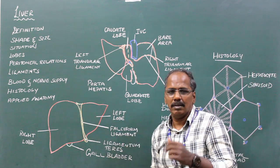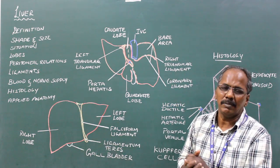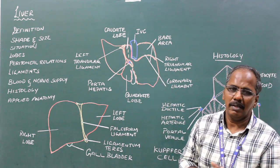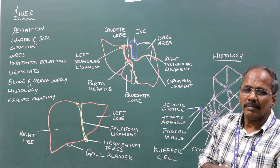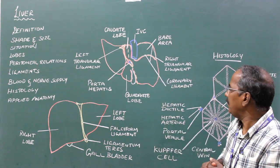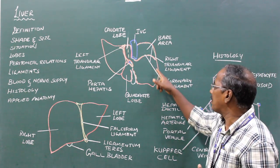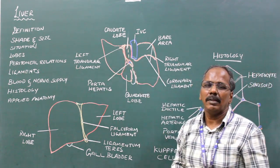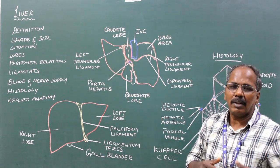Falciform ligament: it connects the anterior surface of the liver to the anterior abdominal wall. Coronary ligament: it is a triangular fold of peritoneum which connects the bare area of the liver to the diaphragm. Right triangular ligament: it connects the right lateral surface of the liver to the diaphragm. Left triangular ligament: it connects the superior surface of the left lobe to the diaphragm.